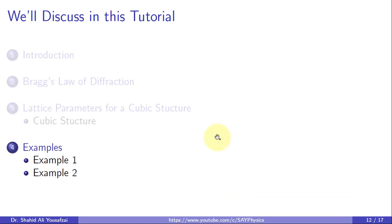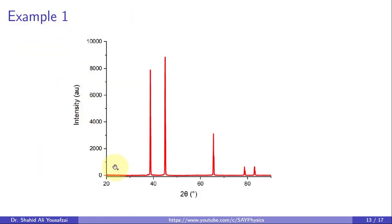Now in this section, we will consider a couple of examples to practically work out the crystal structure from an XRD plot. In example 1, let's say we are having this XRD pattern, for which we will determine the crystal structure and the lattice constants.